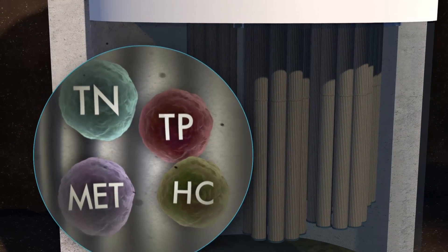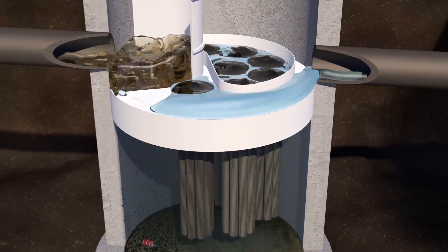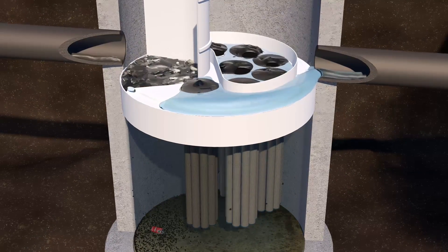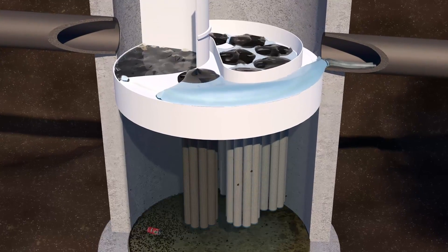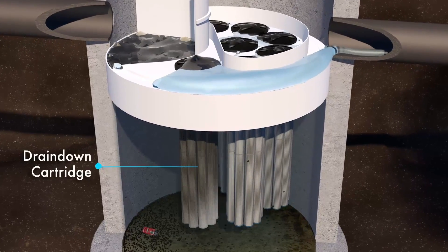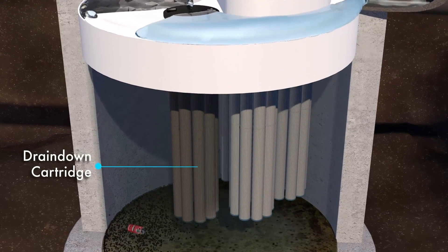As each storm subsides, the treated water caught in the backwash pool flows back into the treatment chamber through the membrane cartridges. This passive backwash extends cartridge life and keeps them clear for future events. The drain-down cartridge located outside the backwash pool enables water levels to balance.